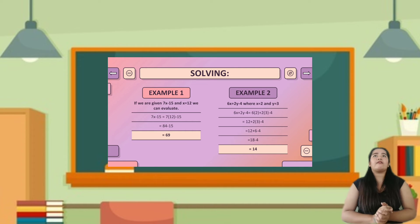Example number two. 6x plus 2y minus 4, where x is equal to 2 and y is equal to 3. 6x plus 2y minus 4. Substitute x and y into 2 and 3. Now, 6 times 2 plus 2 times 3 minus 4. 12 plus 2 times 3 minus 4. 12 plus 6 minus 4. So, 18 minus 4. So, 18 minus 4 is equal to 14.